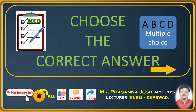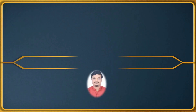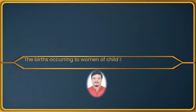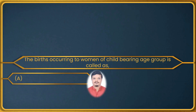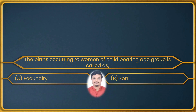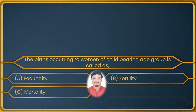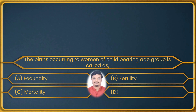First option: choose the correct answers — what we usually call multiple choice questions. In the first question, we shall observe the births occurring to women of childbearing age group. The options are: fecundity, fertility, mortality, and demography.